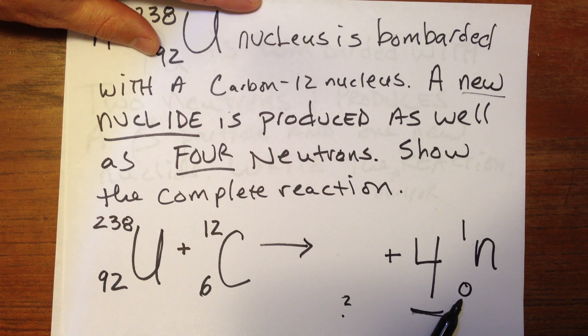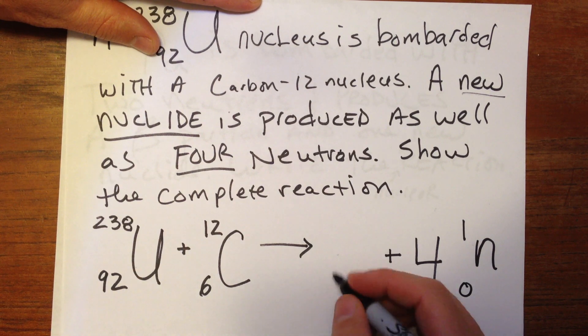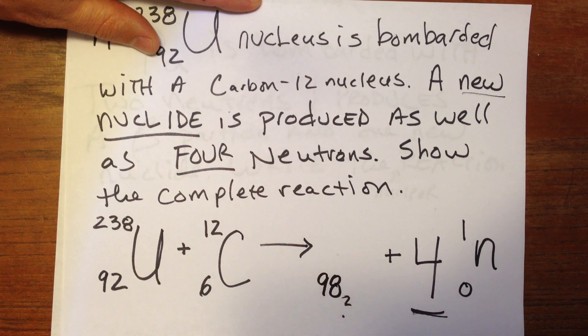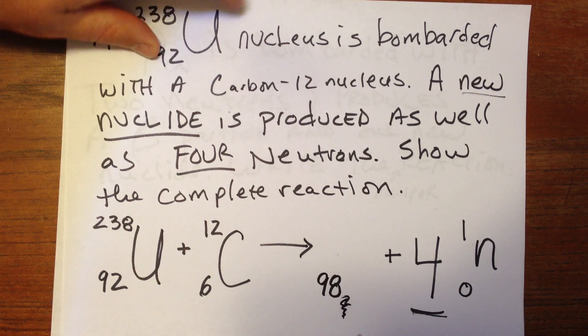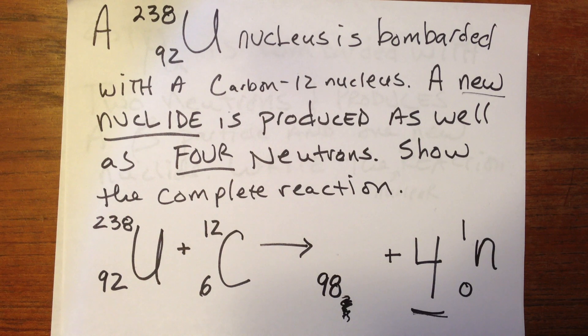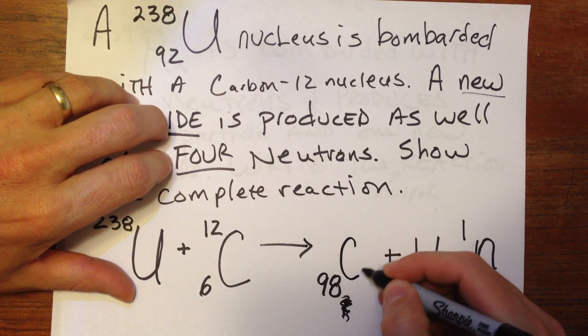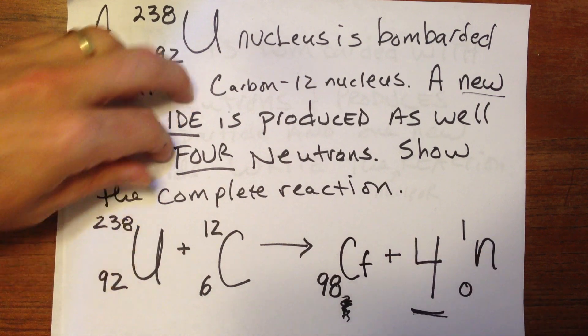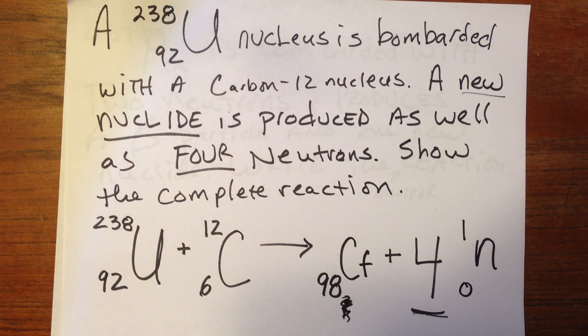Well, this neutron has zero for its atomic number, so we can ignore that. Zero plus what equals 98. Well, clearly the answer is 98. We need 98 on the bottom. So what is element number 98? We know that's a Z number. 98 is Californium. So we're going to put the symbol for Californium in there. But we're not done yet. We've got to figure out which isotope of Californium that is.